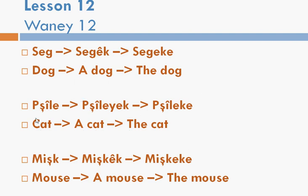Here we have the three subjects: Sag, Pshilak, Mishka — the three main animals. A dog is Sagak, the dog is Sagaka. A cat is Pshilak, the cat is Pshilaka. A mouse is Mishka, the mouse is Mishka. The first one, Sag, and the third one, Mishka, are the same when you add 'the' and 'a'.